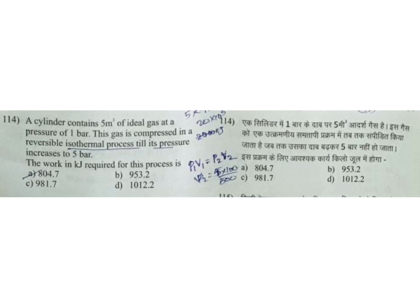Isothermal compression process. Data given: initial volume V1 is 5 meter cube and pressure P1 is 1 bar. Final pressure P2 is 5 bar.